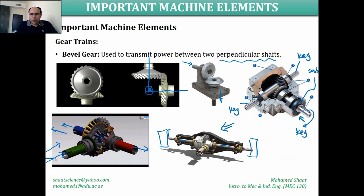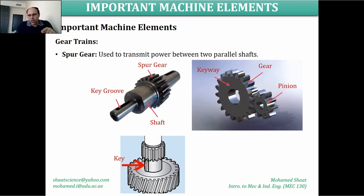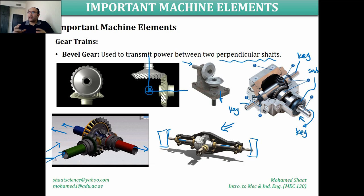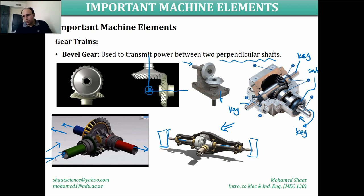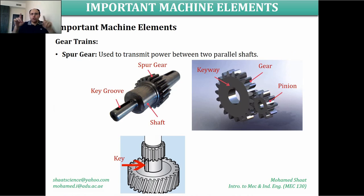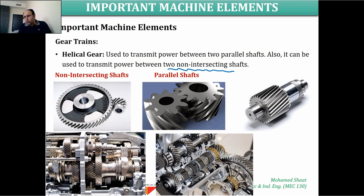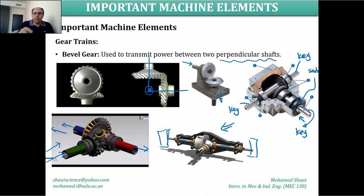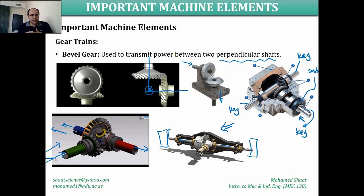So far we have discussed three types of gears: spur gear, helical gear, and bevel gear. It is highly important to know the differences in terms of shape and function. All are used for transmitting power and motion, but the spur gear is for parallel shafts, the helical gear is for parallel and non-intersecting shafts, and the bevel gear is for intersecting shafts — in many cases perpendicular shafts.